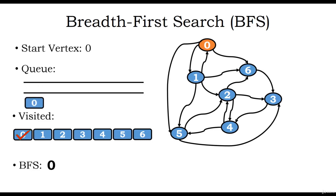The dequeued element is vertex 0. We find all the vertices that can be reached from vertex 0 through three edges. The first vertex visited is vertex 1, which is marked as visited and enqueued. The next vertex is vertex 5, which is not yet visited, so we visit vertex 5, mark it as visited, and enqueue it. Then vertex 6 can also be visited from vertex 0 and is not yet visited, so we visit vertex 6, mark it as visited, and enqueue it.